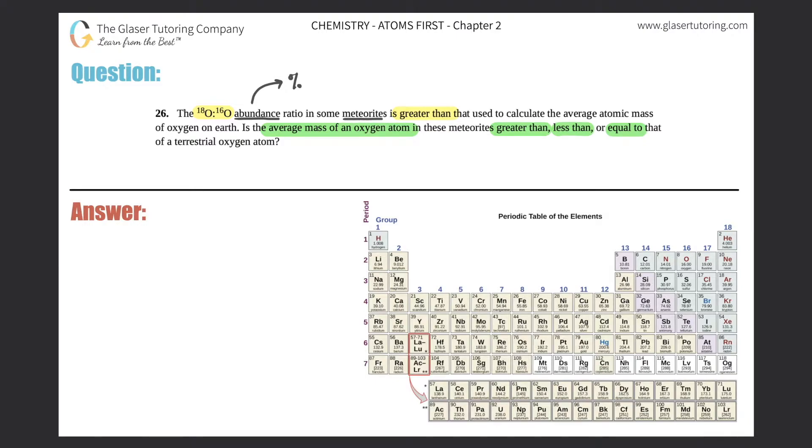So they're saying that we have an O-18, I like to write it this way, to O-16. So this means that basically the mass for this oxygen atom would be roughly 18 AMU, and this mass for this one would be roughly 16 AMU. They're saying that it's greater than the average atomic mass of oxygen on Earth. So just know that oxygen on Earth means terrestrial.